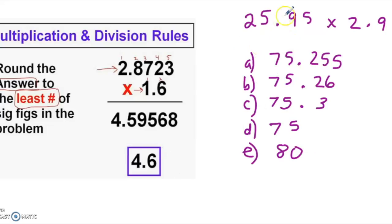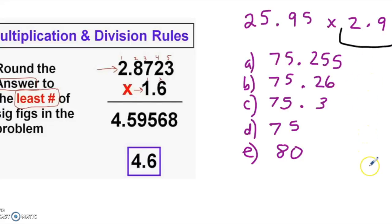Now try this example: 25.95 times 2.9. The number 2.9 has the least number of significant digits — it has 2. So which answer choice would be correct? If you said D, you got it correct. D is the correct answer because it has two significant figures.